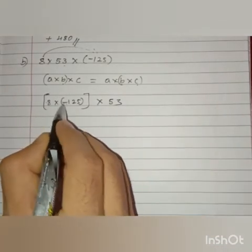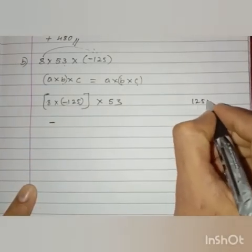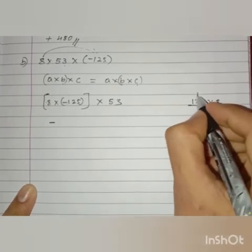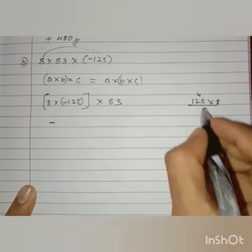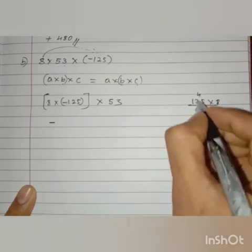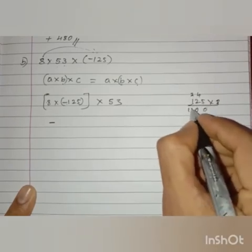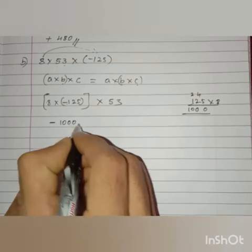Now, plus into minus is minus. 125 into 8. Let us multiply. So, 8 fives of 40 carry 4. 8 twos are 16. 16 plus 4, 20 carry 2. So, 8 ones are 8. 8 plus 2 is 10. So, 125 into 8 is 1000. So, minus 1000 we get.